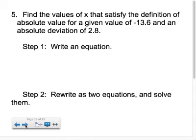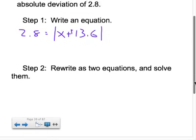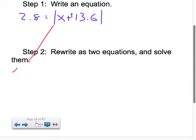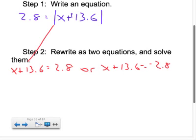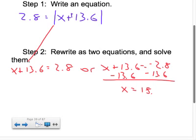Find the values of x that satisfy the definition of absolute value for a given value of negative 13.6 and an absolute deviation of 2.8. So your absolute deviation is 2.8. You're trying to solve for x. You got to subtract off the given value. And so this turns into a plus plus. And so now you end up with your two equations. So you have x plus 13.6 equals 2.8 or x plus 13.6 equals negative 2.8. Subtract your 13.6 from both sides. So x equals negative 16.4.